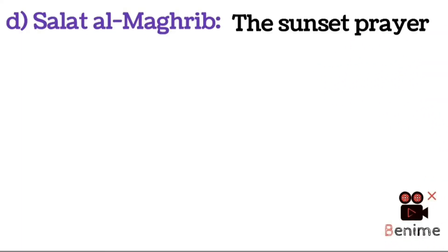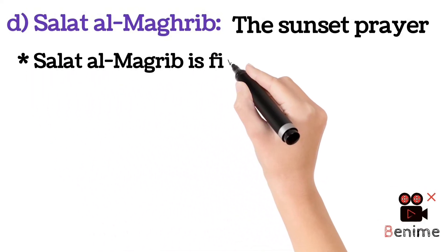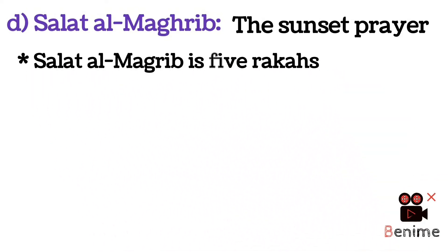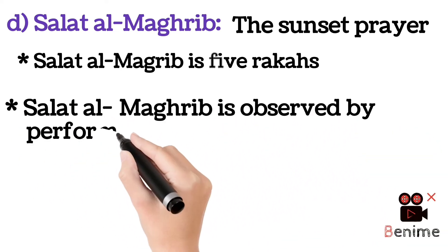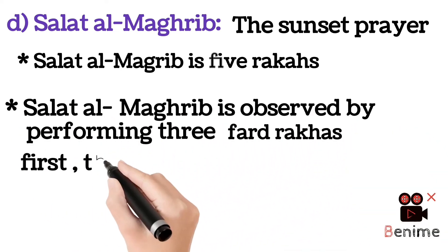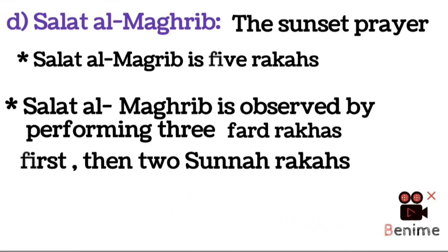Salat al-Maghrib, the sunset prayer, is five rakahs. Salat al-Maghrib is observed by performing three Fard rakahs first, then two Sunnah rakahs.